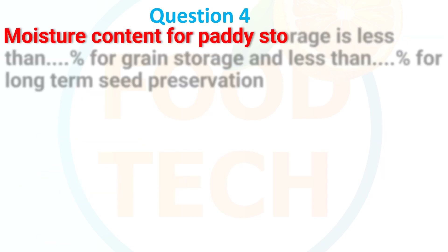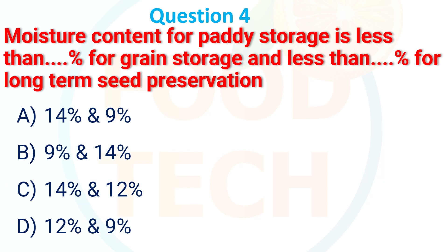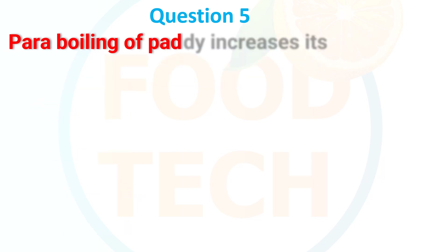Moisture content for paddy stored is less than dash percent for grain storage and less than dash percent for long-term seed preservation: a) 40 and 9%, b) 9 and 14%, c) 40 and 12%, d) 12 and 9%. The answer is 40 and 9 percent.